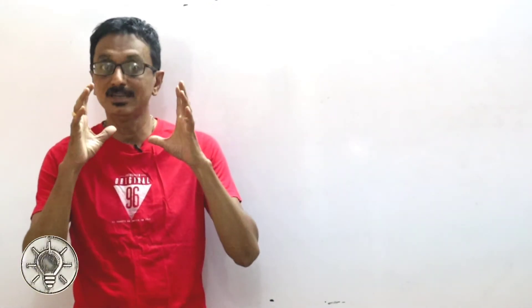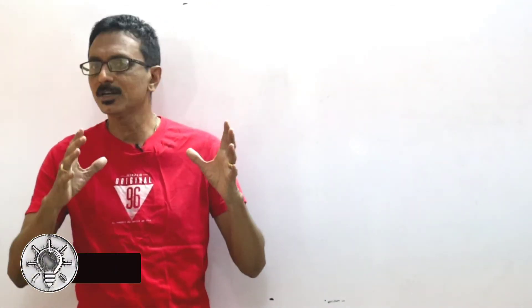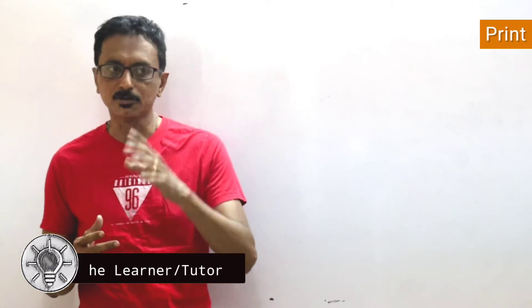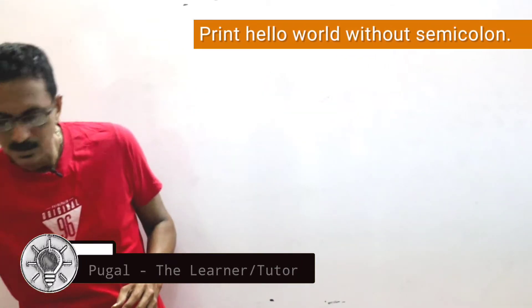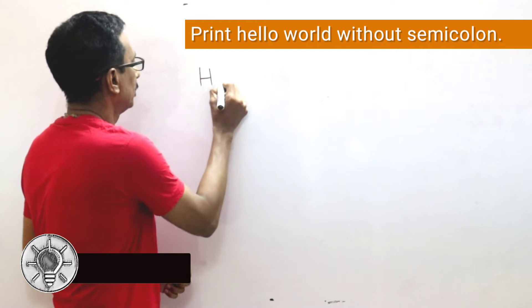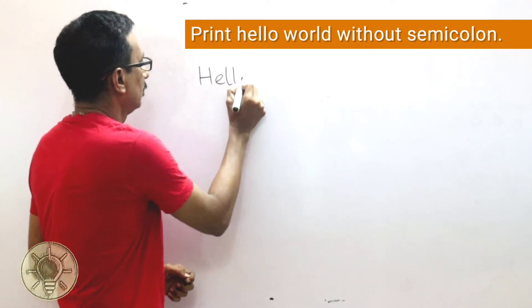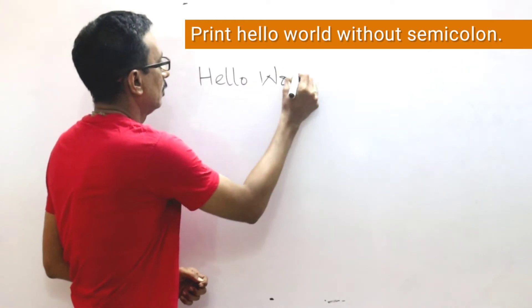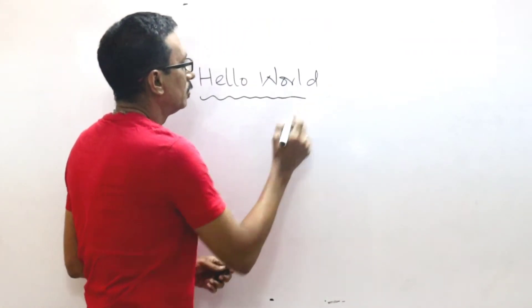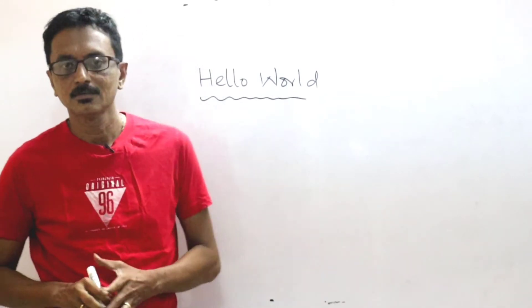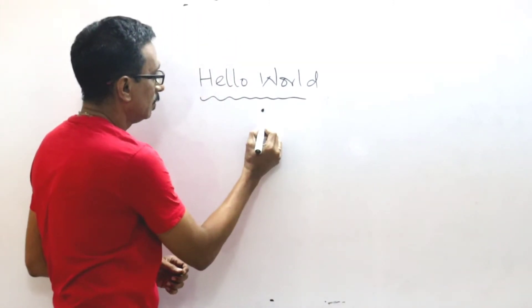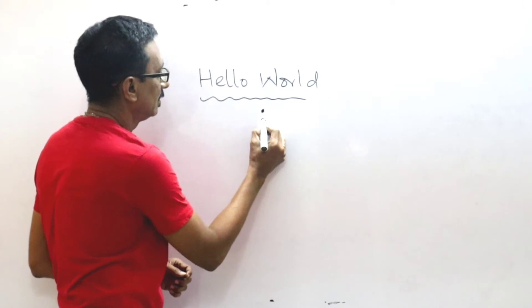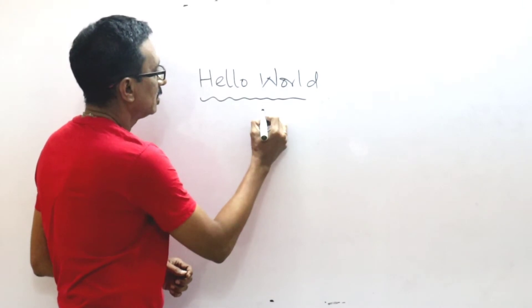In this program, there is an interview question that is very common. You've got to print Hello World. If you come to this output, what do you use in your program? It's not a semi-colon.